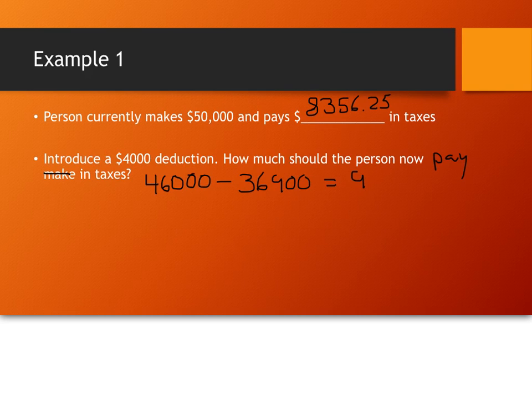So $46,000 minus $36,900. So that person made, in this case, $9,100 over the $36,900. So, tax bracket would say, the amount of taxes you're going to pay are $5,081.25 plus 25% of, in this case, $9,100.